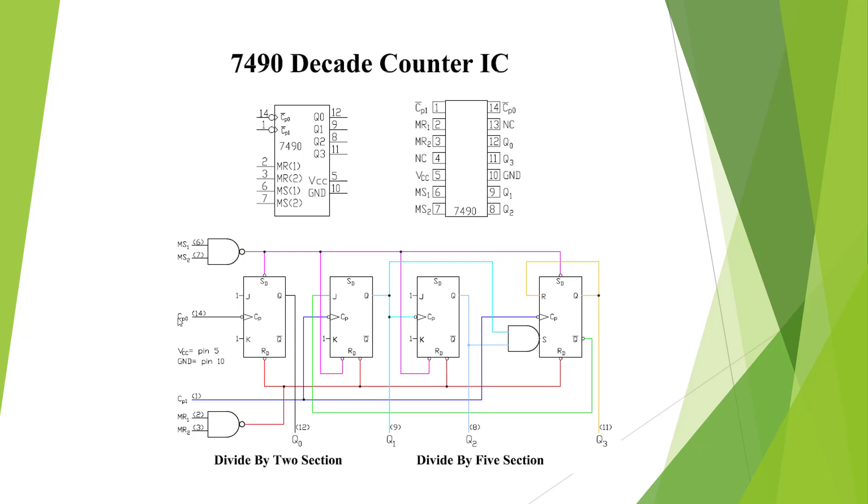It has two clocks, CP0 and CP1. So we have a clock to the 2, we have a clock to the 5. And when we combine them, we're going to tie these clocks together with the outputs, and we can make it divide by 10. It has four outputs, Q0, Q1, Q2, and Q3.